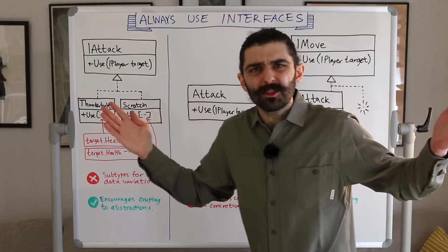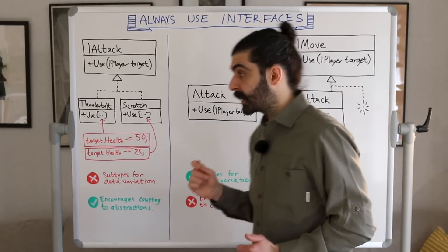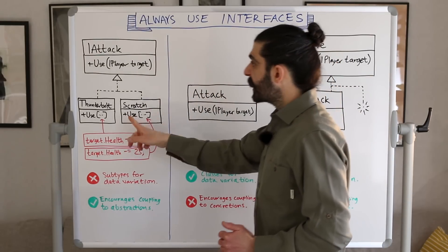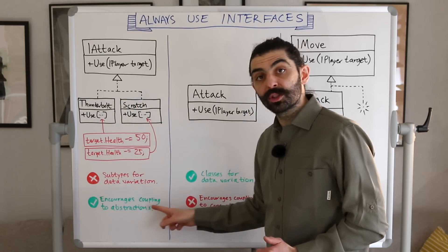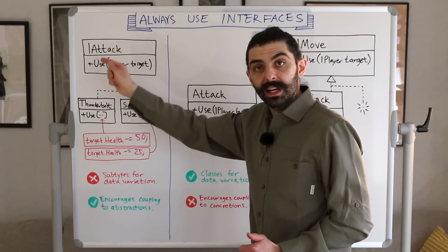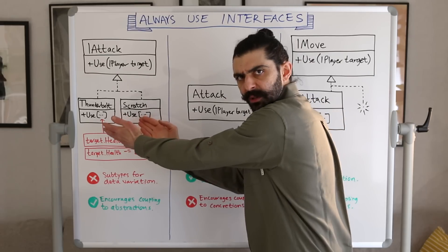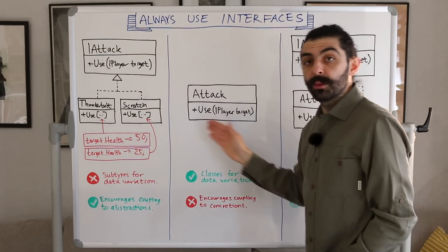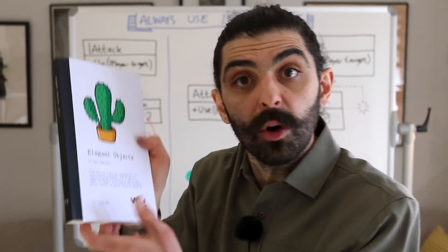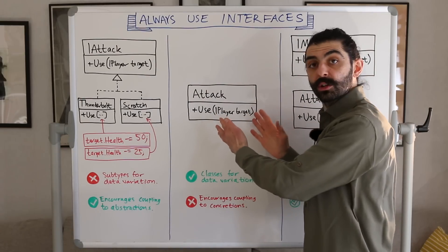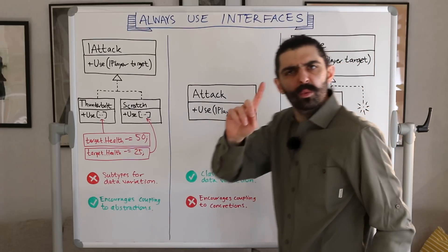But what does this have to do with coupling to abstractions rather than concretions? What we did lose when doing this is that we lost our abstraction. iAttack was the abstraction, and what's good about that is it encourages coupling to abstraction — users of attacks could couple to this abstraction instead of the actual concretions. But now that we've removed this abstraction, we are violating the rule of always using interfaces as per Elegant Objects, because now we only have a concretion, encouraging others to couple to this particular class, which is not good.